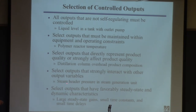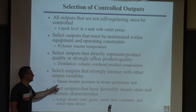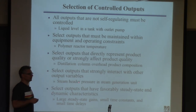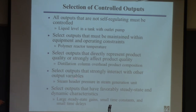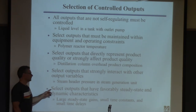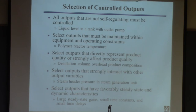Select outputs that strongly interact with each other. For example, steam header pressure — the amount of steam generated depends heavily on inlet pressure. If there are large variations in inlet pressure, the steam output changes, which is probably not good. So you want to control the upstream pressure for more reliable output. Finally, select things with favorable steady-state and dynamic characteristics. This last criterion is one of the most important from the standpoint of what we're focusing on in this course.